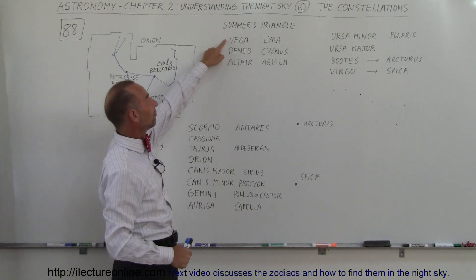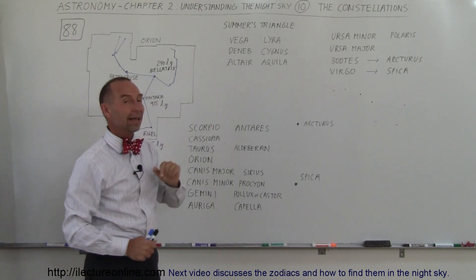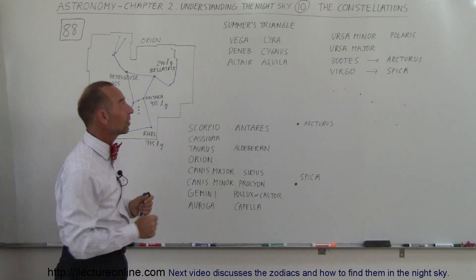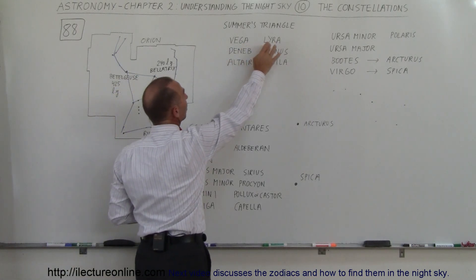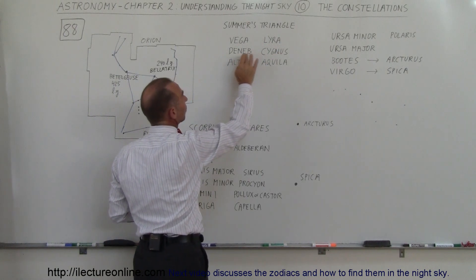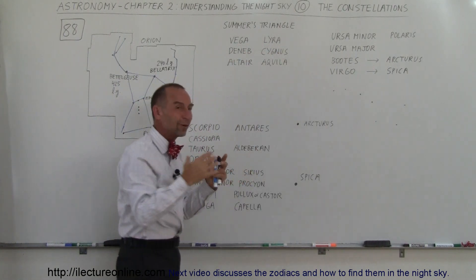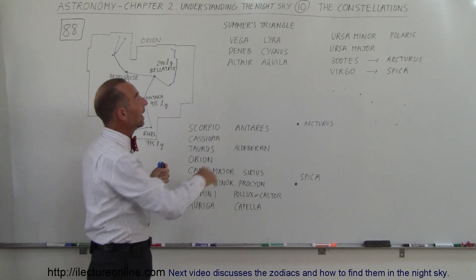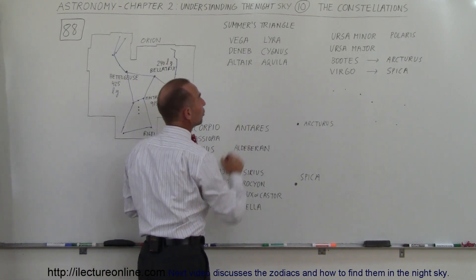And the three stars are Vega, Deneb, and Altair. And if you find that big triangle, that helps you find already three of the constellations because Vega belongs to the constellation Lyra, Deneb belongs to the constellation Cygnus, which also is kind of our Northern Hemisphere's Northern Cross. And then Altair belongs to Aquila.